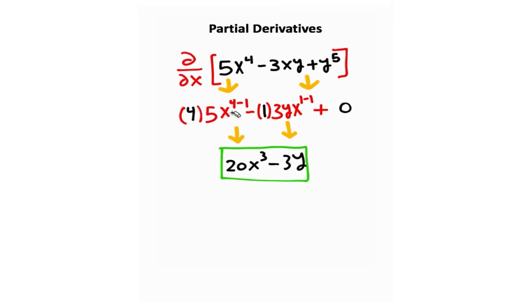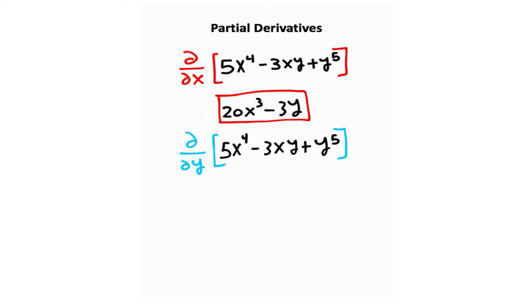Notice how we only use the power rule on terms that had x in them. Anything that was y, we just treated like it was another constant number. So this is the partial derivative with respect to x. Notice that we got rid of this y term at the end because the derivative of a constant is zero, and we're treating y like it's constant.